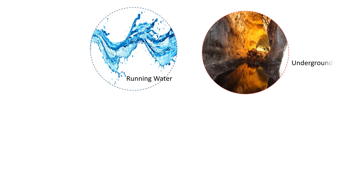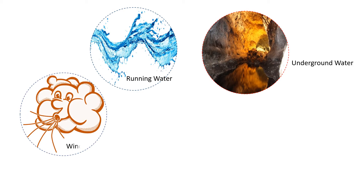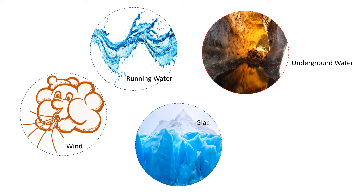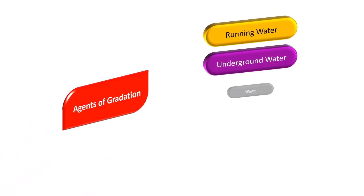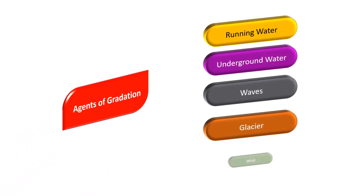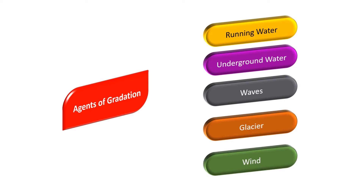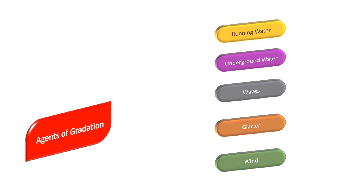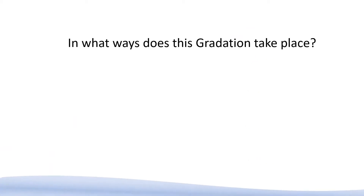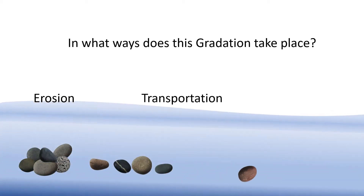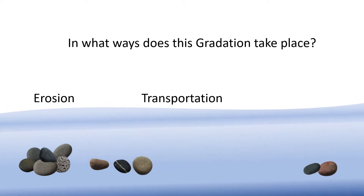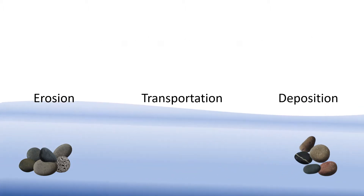As to the question of what makes gradation happen: gradation happens due to some natural agents such as running water, underground water, waves, glacier, and wind. As to the question of how gradation happens, it happens in three stages — namely, erosion, transportation, and deposition.